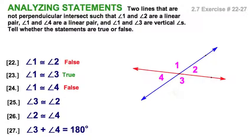Angle 3 and angle 2, well, they are a linear pair, so that's going to be false. Angle 2 and angle 4, well, that's the other pair of vertical angles, so they are congruent. How about this? The measure of angle 3 plus the measure of angle 4 equals 180, and that would be true because they are a linear pair. All right, that was pretty easy. Let's move on.